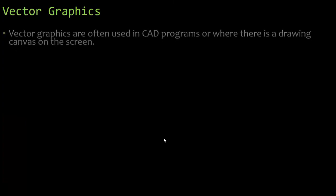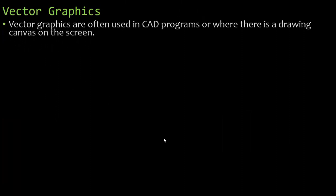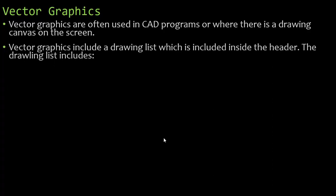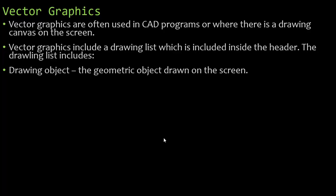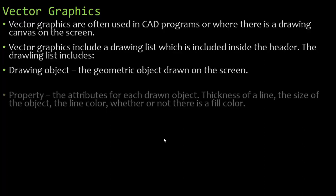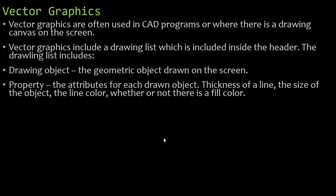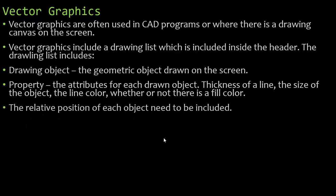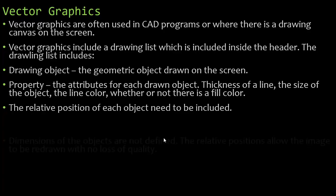So how do vector graphics work? Vector graphics are often used in CAD programs or where there is a drawing canvas on the screen. Vector graphics include a drawing list, which is included inside the header. The drawing list includes a drawing object — the geometric object that's going to be drawn on the screen. The header also includes the property — the attributes for each drawn object. If we draw a circle, it needs to know the thickness of the line, the size of the circle, the line color, and whether or not there's a fill color. The relative position of each object needs to be included so that when it scales up or down, it can redraw it appropriately.